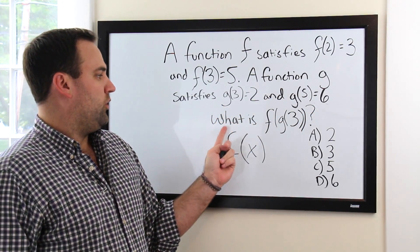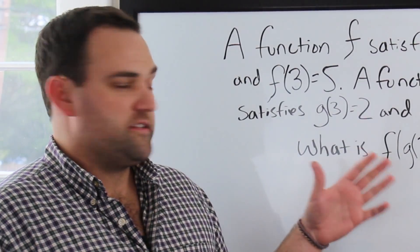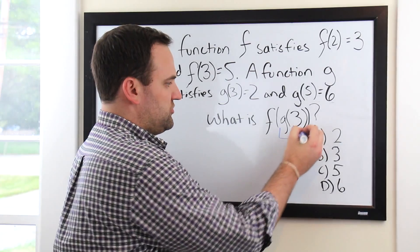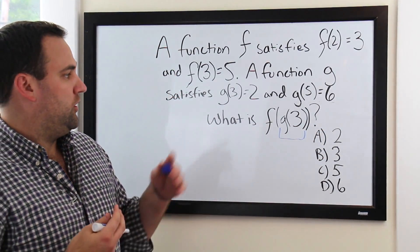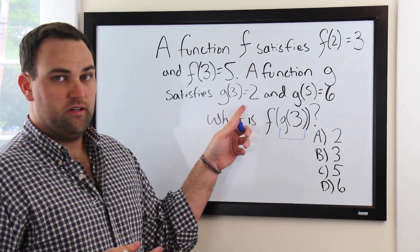And we want to know what is f(g(3)). So, let's start here with what we're looking for, and let's just start with our middle piece here, what's inside, g of 3. Now, we know, without even doing any math from our problem, that g(3) is equal to 2.